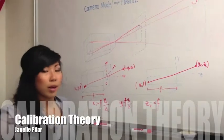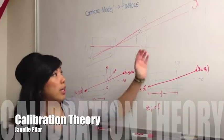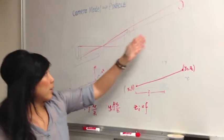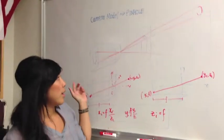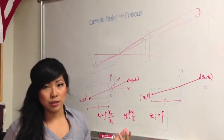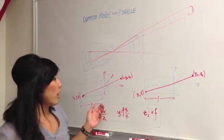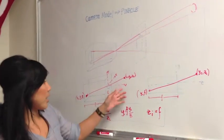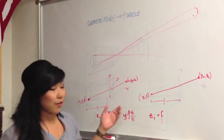We're using a pinhole model for our camera, and it's important because we're taking rays from our object and passing it through the pinhole and then getting a projected image on our image plane. We're using X sub C, Y sub C, and Z sub C as our reference frame.